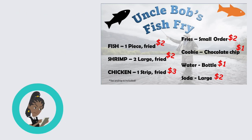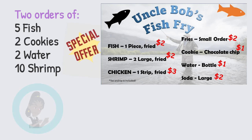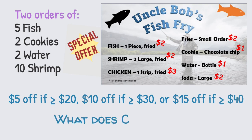Claudia orders 2 pieces of fish, 5 pieces of fish, 2 cookies, 2 bottles of water, and 10 shrimp. She has a special coupon that takes $5 off if she spends $20 or more, $10 off if she spends $30 or more, and $15 off if she spends $40 or more. What is her total bill?